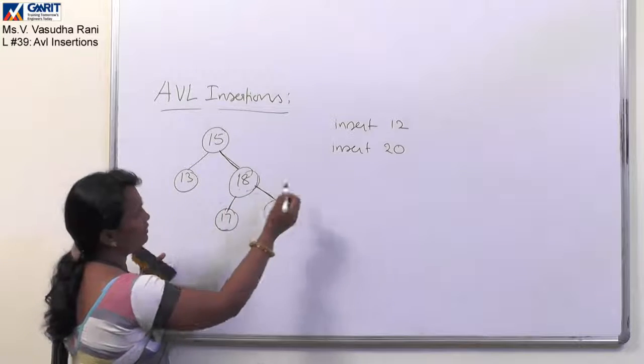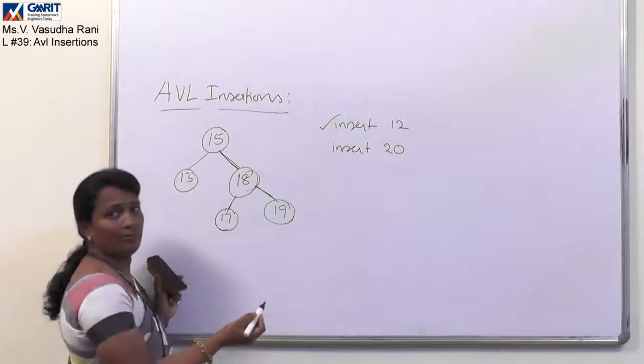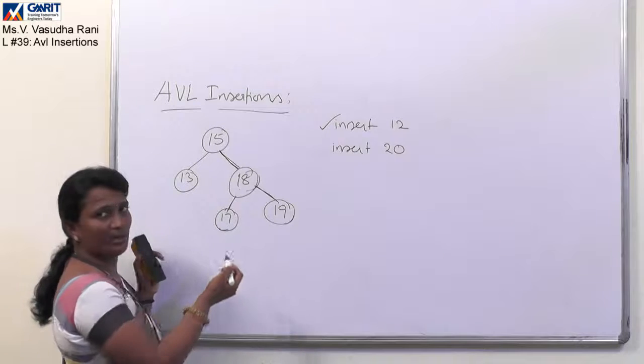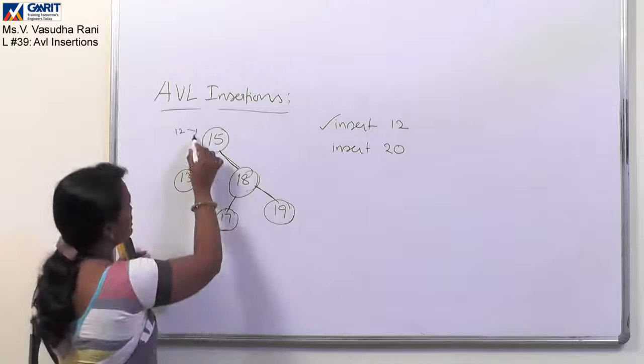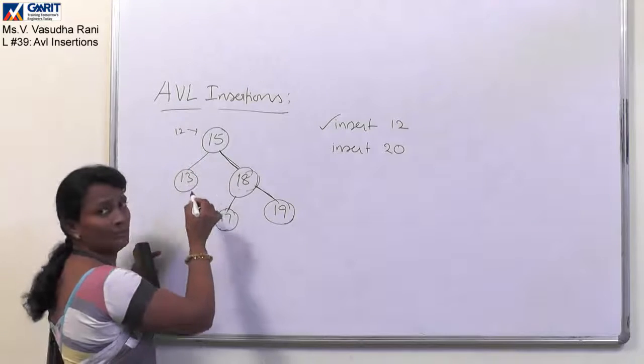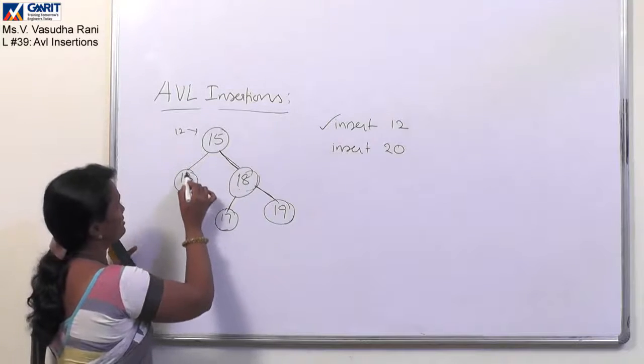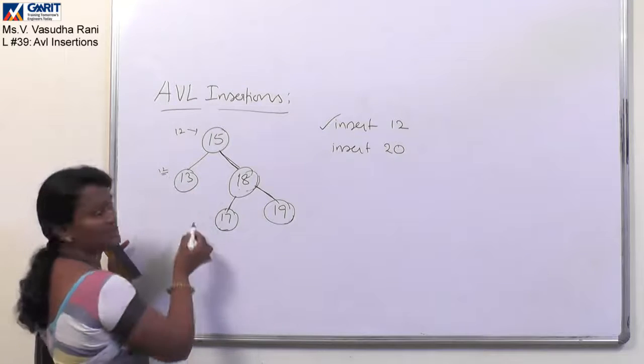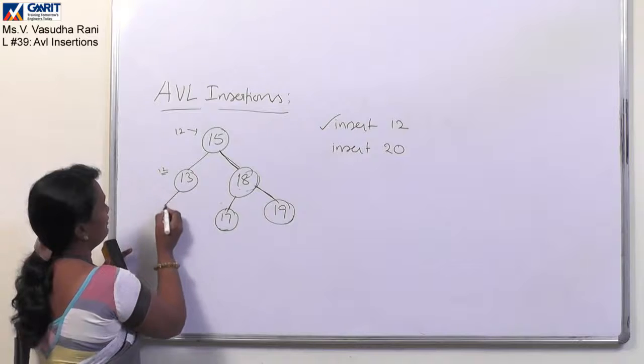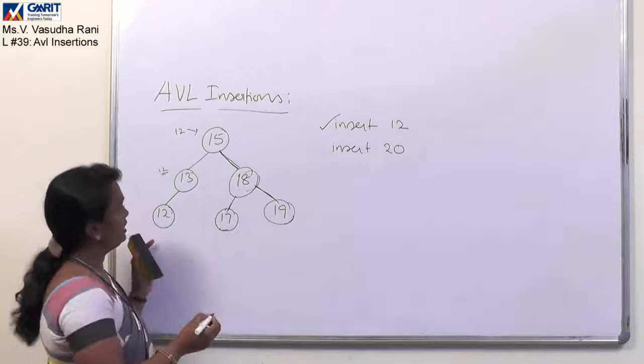Now for this tree, first insert 12. How to insert 12? This is basically a binary search tree only. So 12 we have to compare with the root node as it is having lesser value. So we will come to its left and here it is 13, and to 13 it will be comparing and it is having lesser value. So 12 will be added as its left child.